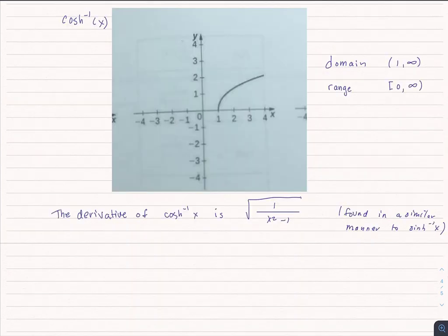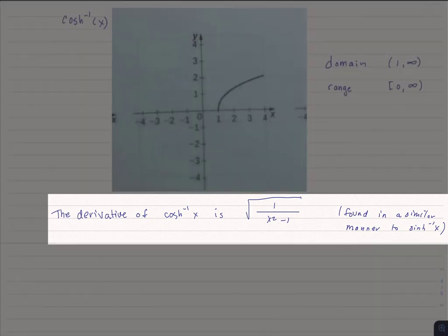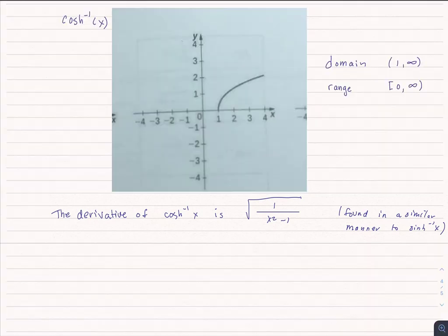We would do the exact same technique to find the derivative of inverse hyperbolic cosine. I won't put you through it, but just trust me that it's the square root of one over x squared minus one, and it would be the exact same method that we did previously.